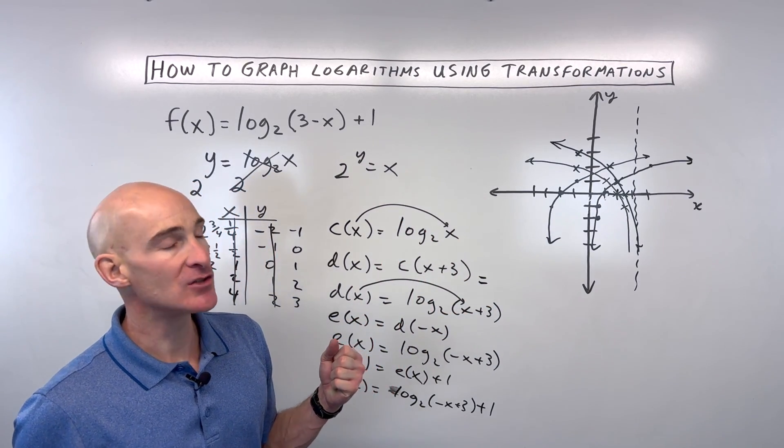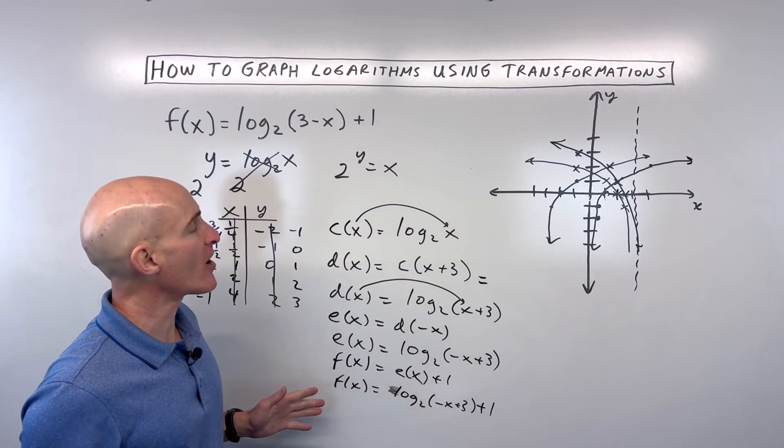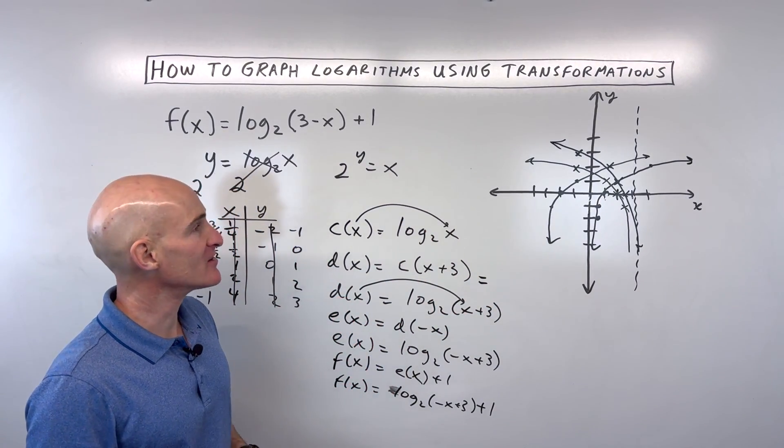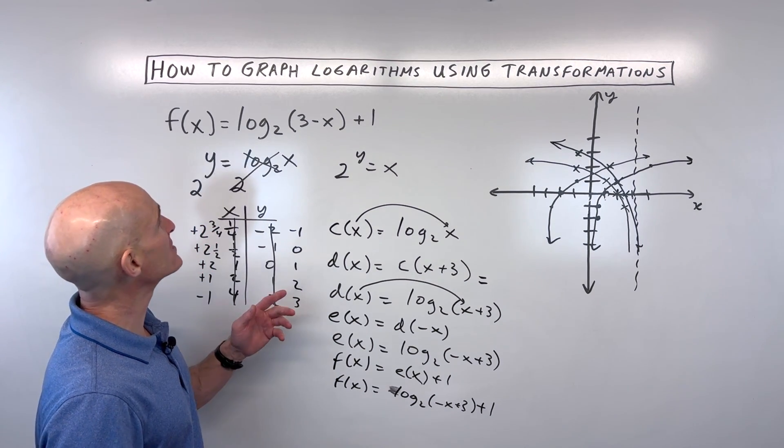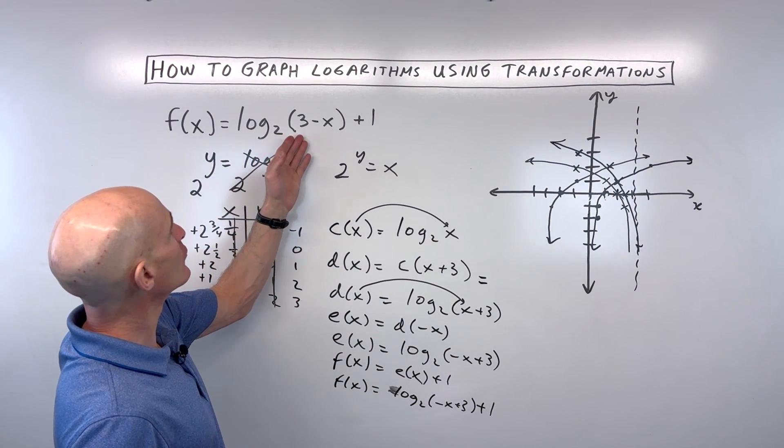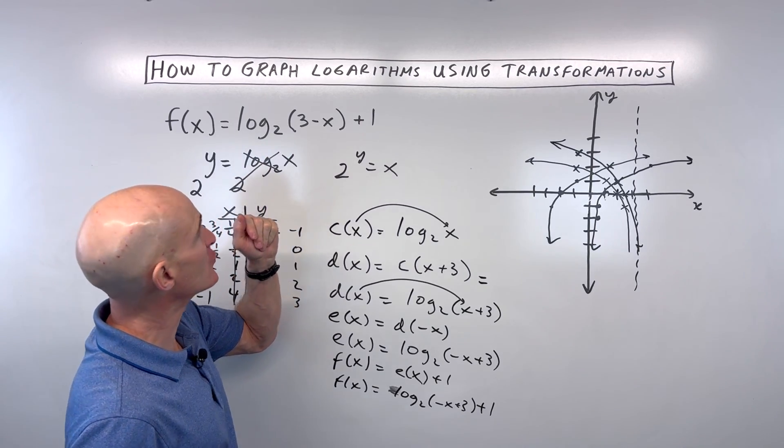Now you might be saying, Mario, that's a complete disaster. It's completely confusing. What's another method? Another method is we could rewrite this equation in the exponential form.